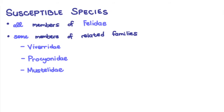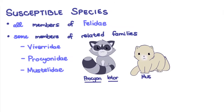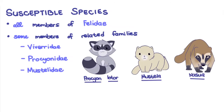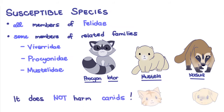Only a few members of those families suffer from clinical disease, such as the raccoon, mink, and coatimundi. It does not harm canines. Although, on the flip side, some canine parvovirus strains can cause a panleukopenia-like illness in cats.